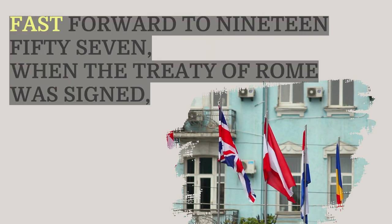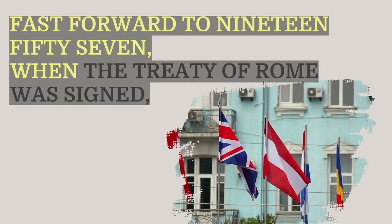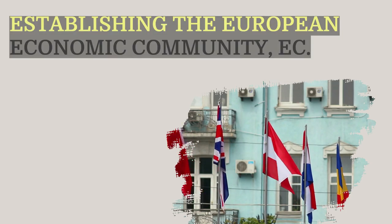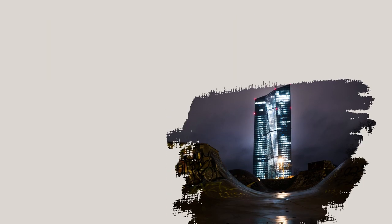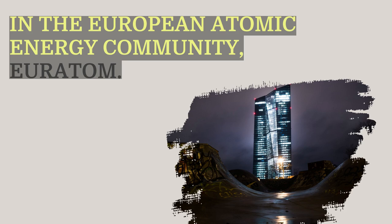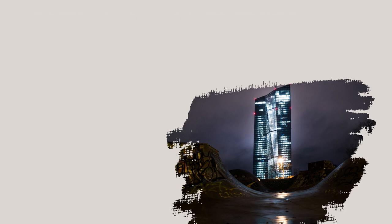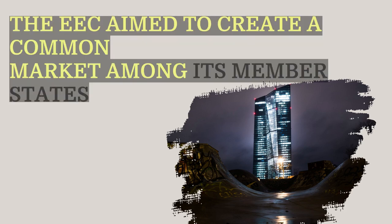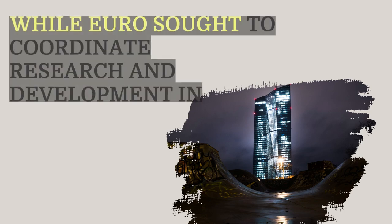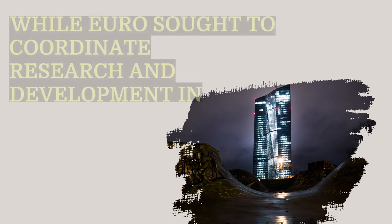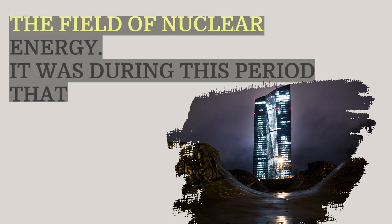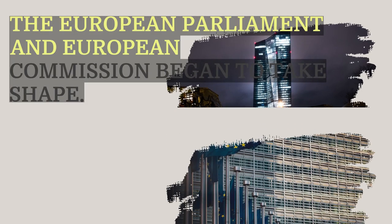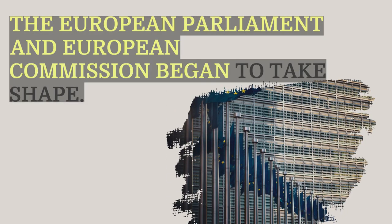Fast forward to 1957, when the Treaty of Rome was signed, establishing the European Economic Community (EEC) and the European Atomic Energy Community (Euratom). The EEC aimed to create a common market among its member states, while Euratom sought to coordinate research and development in the field of nuclear energy. It was during this period that the European Parliament and European Commission began to take shape.